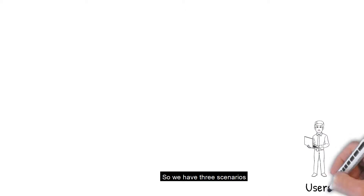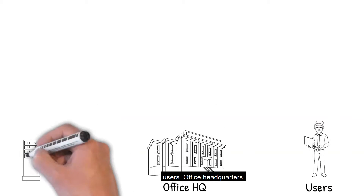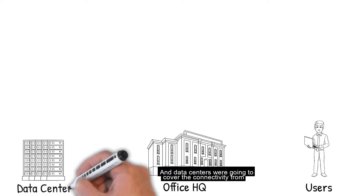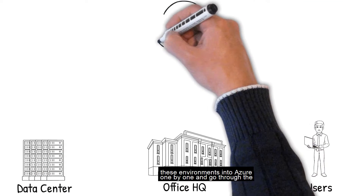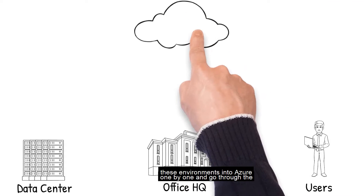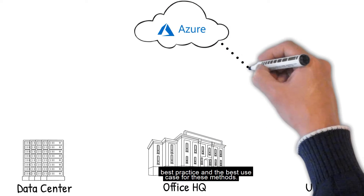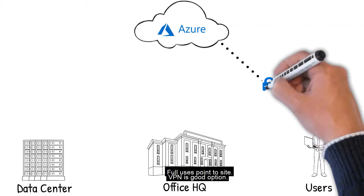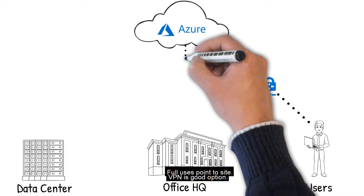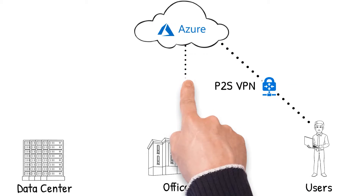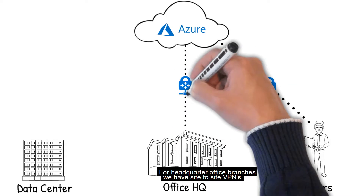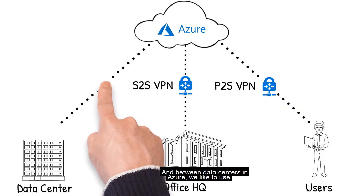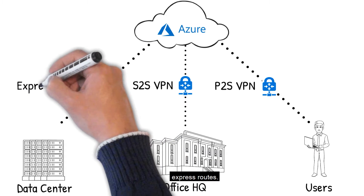So we have three scenarios: users, office headquarters, and data centers. We're going to cover the connectivity from these environments into Azure one by one and go through the best practice and best use case for these methods. For users, point-to-site VPN is a good option. For headquarter office branches, we have site-to-site VPNs. And between data centers and Azure, we like to use ExpressRoute.